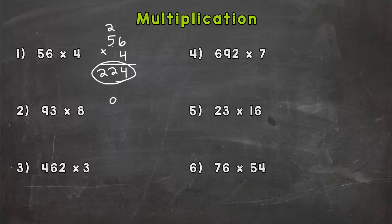Number two, we have 93 times 8. So we start with 8 times 3. 8 times 3 is 24, carry the 2. Then we do 8 times 9, which is 72, plus that 2 is 74. Circle our product, 744.